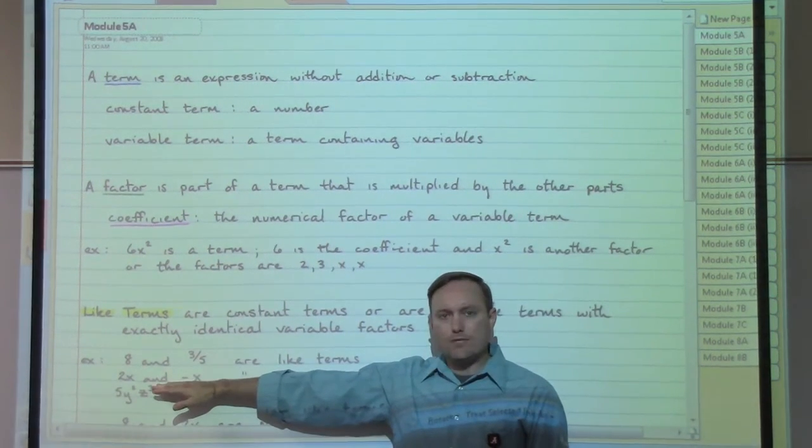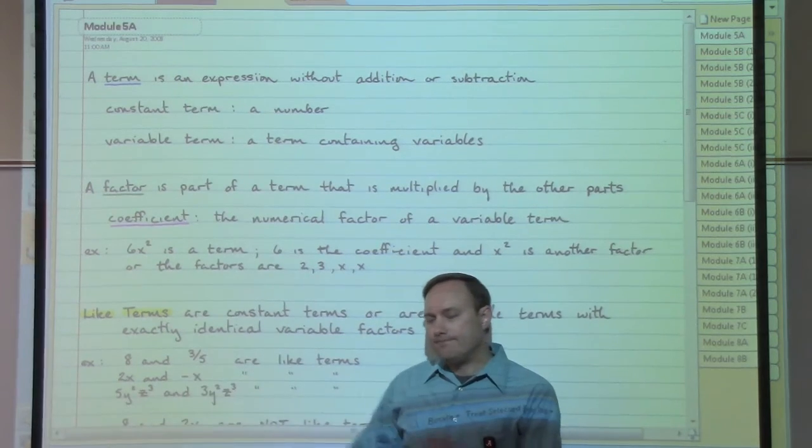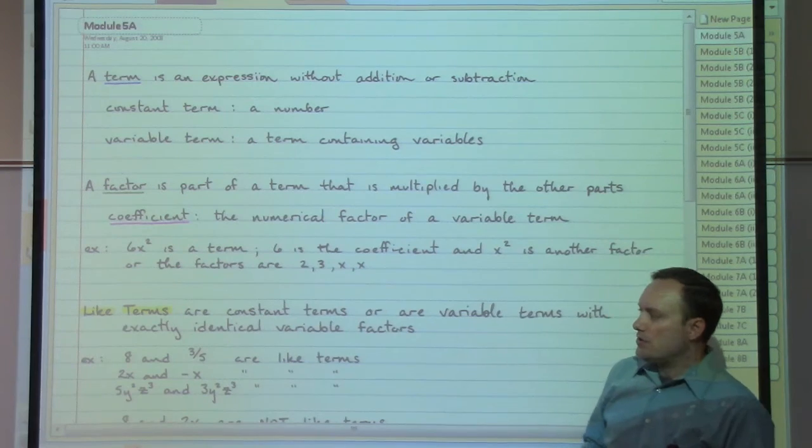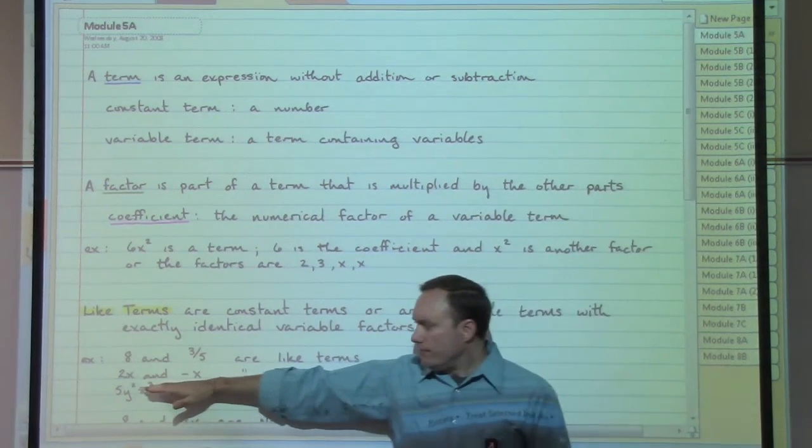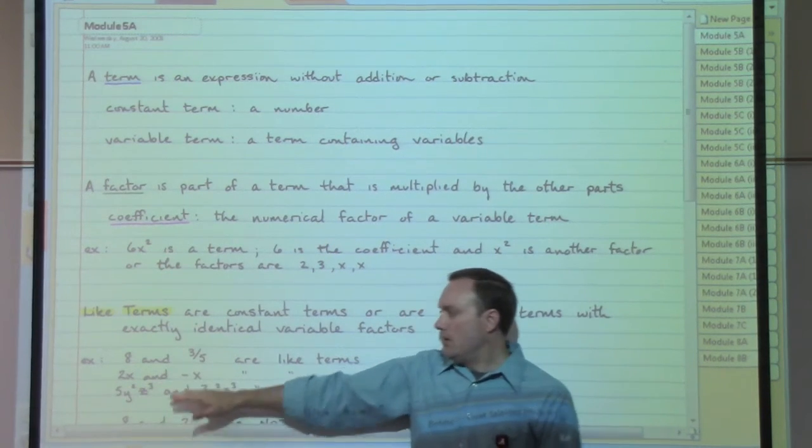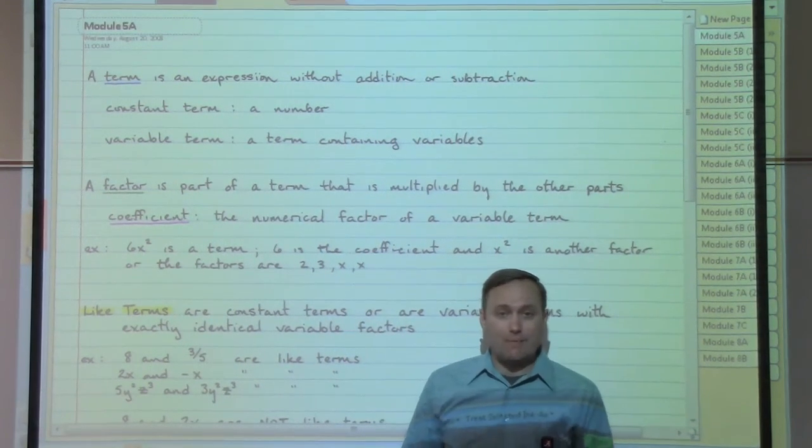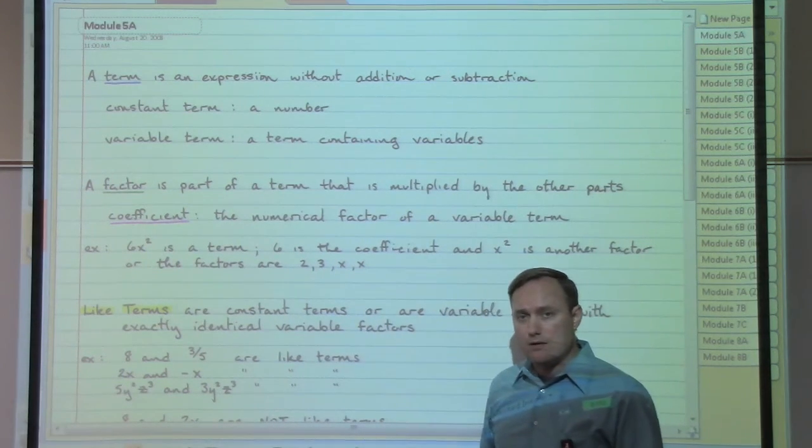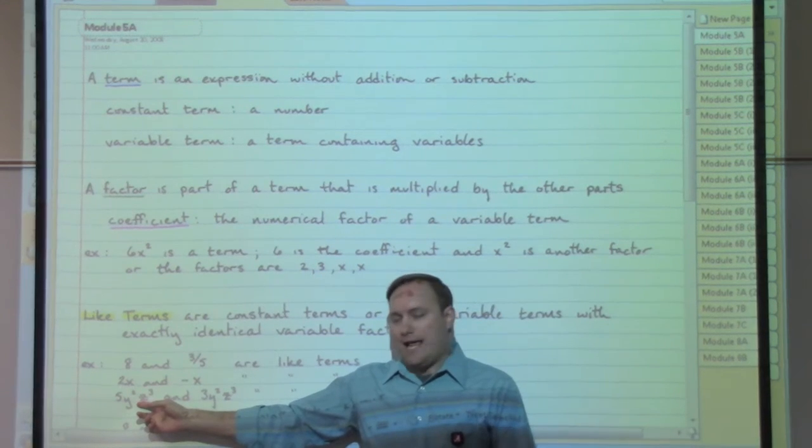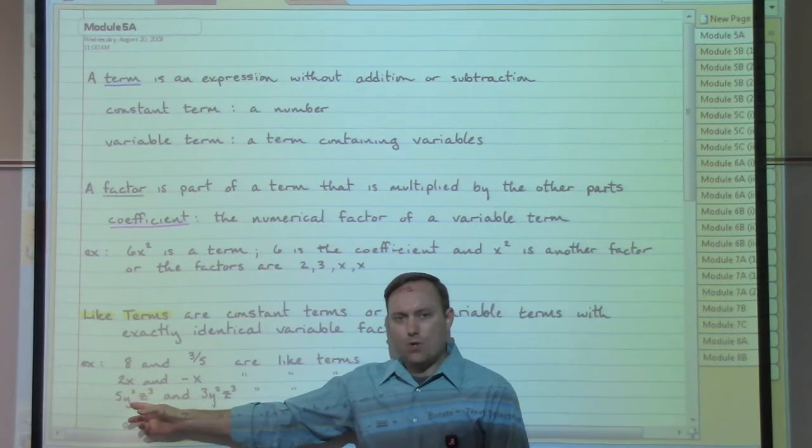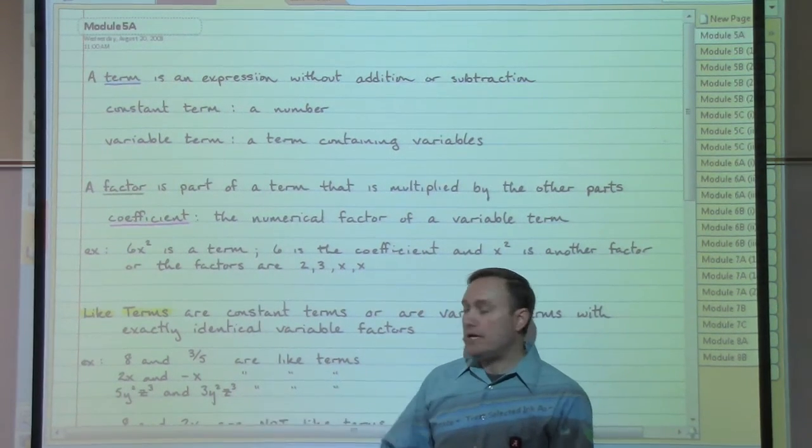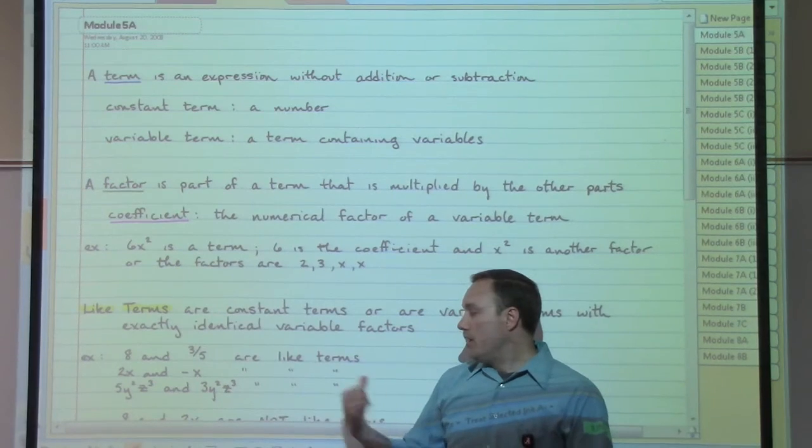Like terms are constant terms—plain old numbers—or terms that have the same variable letter and the same power. Notice here we have 2x with a regular x and no crazy powers, and a negative x with an x and no crazy powers—those are alike. If we have more variable letters, all the letters and their powers would have to match up. So y²z³ and y²z³ all match up—those would be considered like terms.